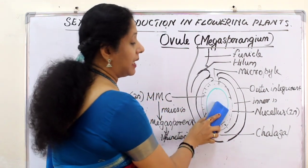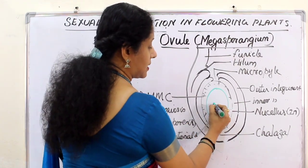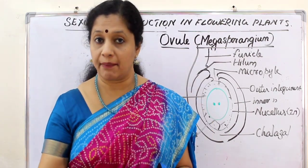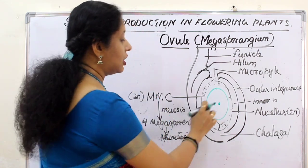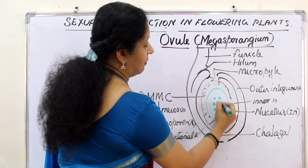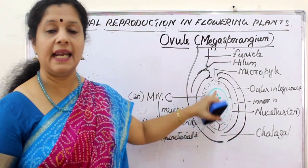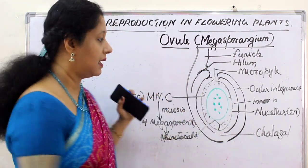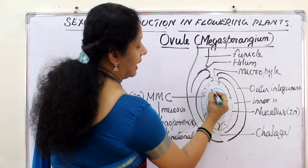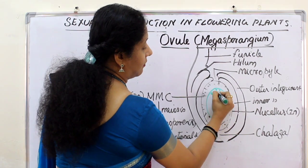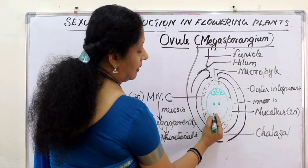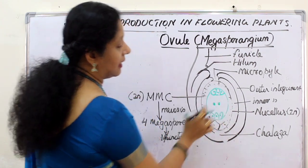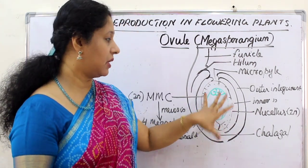During monosporic development we have only one megaspore left, called the functional megaspore. This will now undergo mitotic division — only nuclear division, not cytoplasmic division. The nucleus divides to form two daughter nuclei, two divide to form four, and four divide to form eight. Until the eight-nucleate stage, division continues. Once the eight-nucleate stage is reached, wall formation begins. Three nuclei move to the micropylar end and three move to the chalazal end, while two nuclei remain in the central cell.